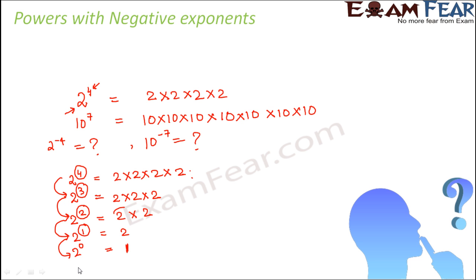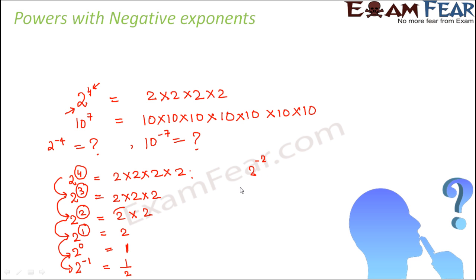Following that pattern, what can you say? 2 to the power minus 1 would be what? You have reduced further by one step from 0 to minus 1, so this side will also get divided by 2 further — this will become 1 by 2. If we proceed further and say 2 to the power minus 2, that is the next step, so this 1 by 2 will further get divided by 2.